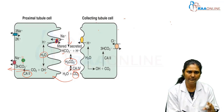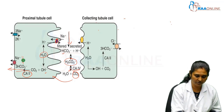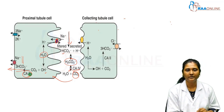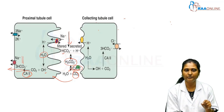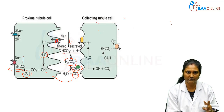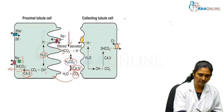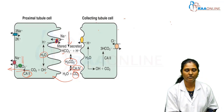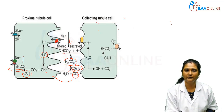Important MCQ points: the carbonic anhydrase present inside the tubule cell is type 2, and the one present in the lumen is type 4. The two main transporters in the proximal tubular cell are the sodium-hydrogen exchanger and the sodium bicarbonate co-transporter.